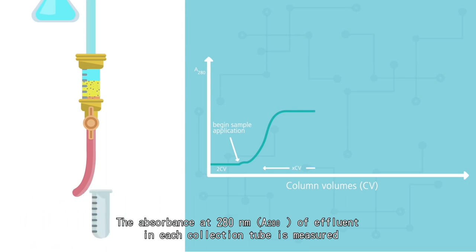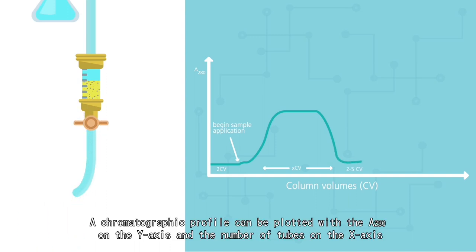The absorbance at 280 nm of effluent in each collection tube is measured. A chromatographic profile can be plotted with the A280 on the y-axis and the number of tubes on the x-axis.